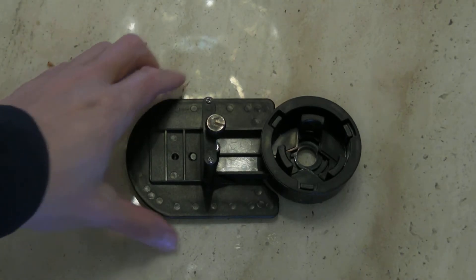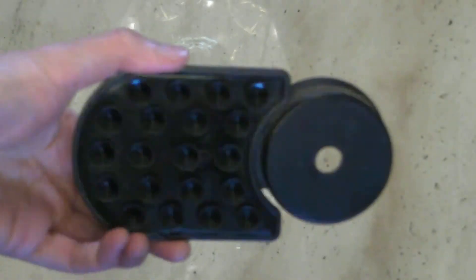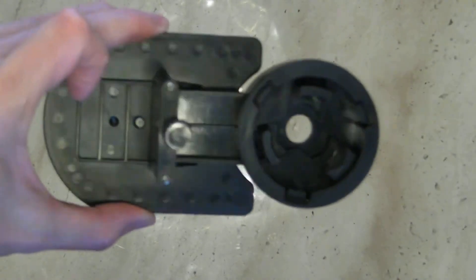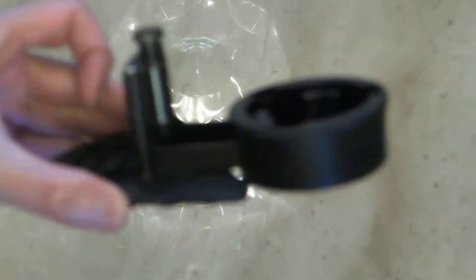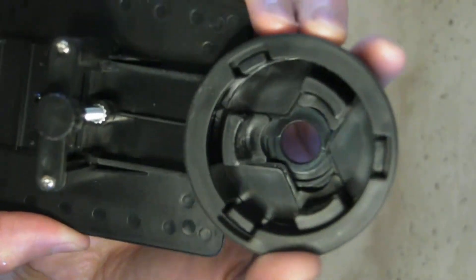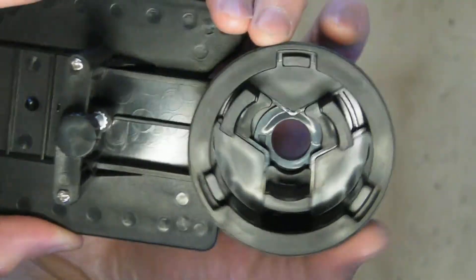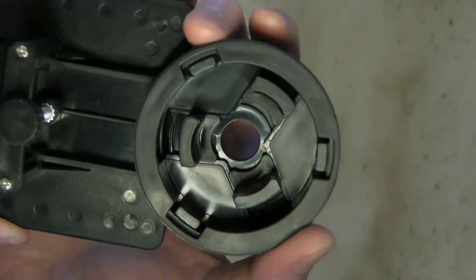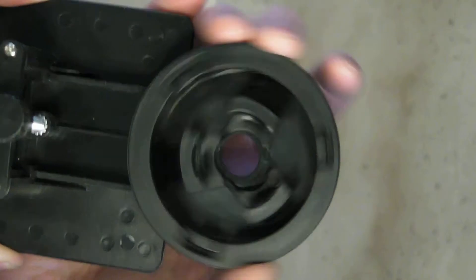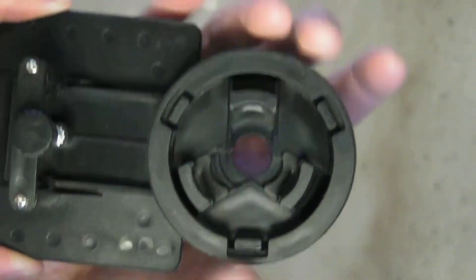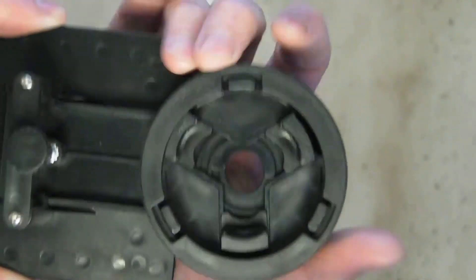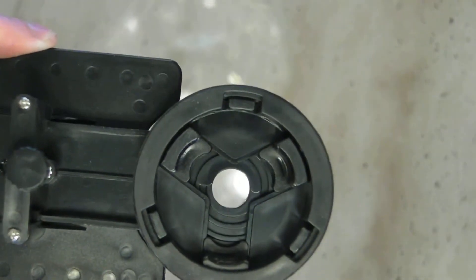And this is your attachment piece that allows you to attach your cell phone to your telescope. So you can see when you turn this, this piece will get smaller. When you turn it clockwise it gets larger. So what you want to do is...